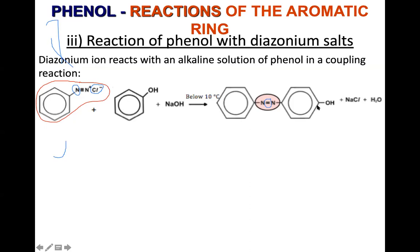This product is called a diazo dye — the colored dye used in fabric and paints. This is one of the active chemicals present in dye. Phenol activates the 2, 4, and 6 positions. However, in a coupling reaction, substitution happens preferentially at the 4th position (para position).